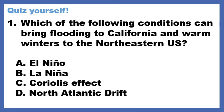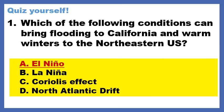We're going to end with a quiz — two questions today, so please don't sign off until we get to question two. Number one: Which of the following conditions can bring flooding to central California and warm winters to the northeastern U.S.? A. El Niño. B. La Niña. C. Coriolis effect. Or D. North Atlantic drift. The Coriolis effect makes curved winds and ocean currents based on Earth's rotation and tilt. The North Atlantic drift is a surface current that brings warm water up the southeastern coast, like up to Florida. The correct answer is El Niño, which brings flooding to California and Texas and can bring warmer winters to other parts of the states.